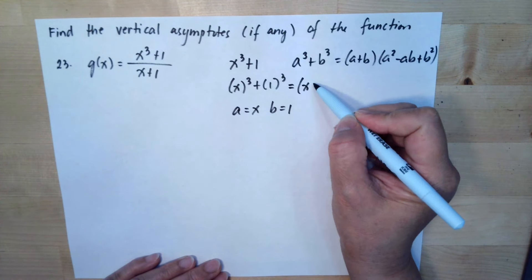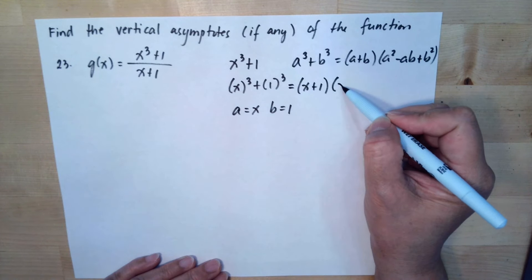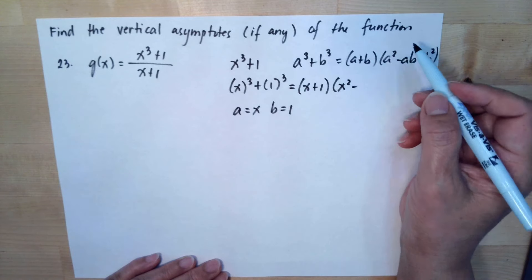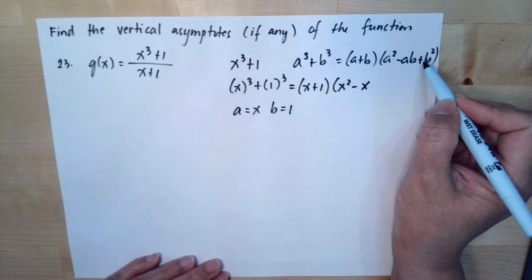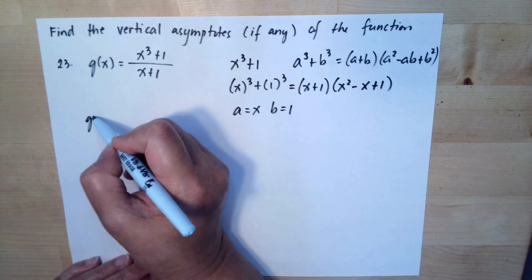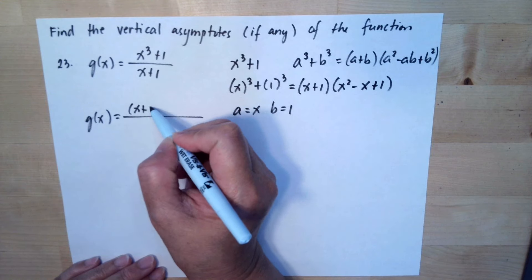So this we have x + 1 then multiplied by x² minus a multiplied by b so x multiplied by 1 so it's x and b² is 1.